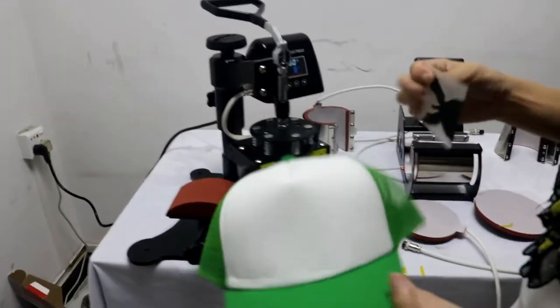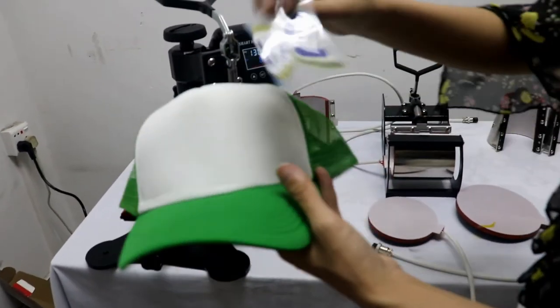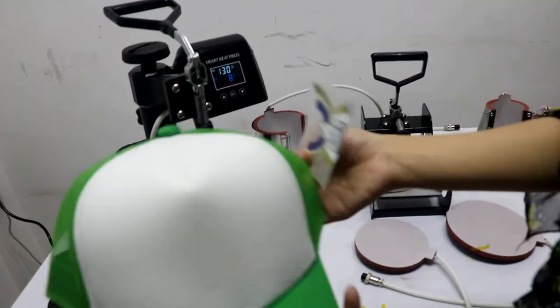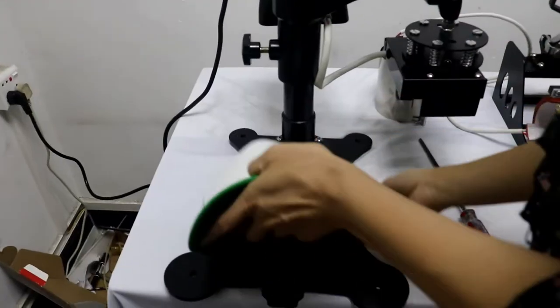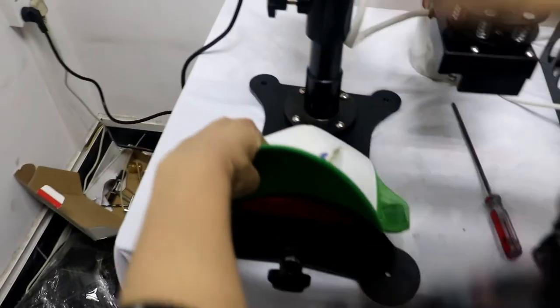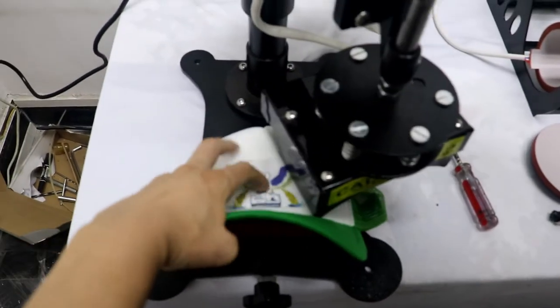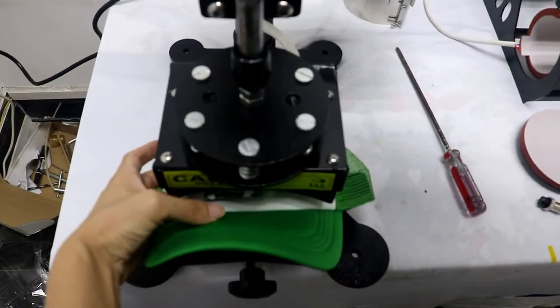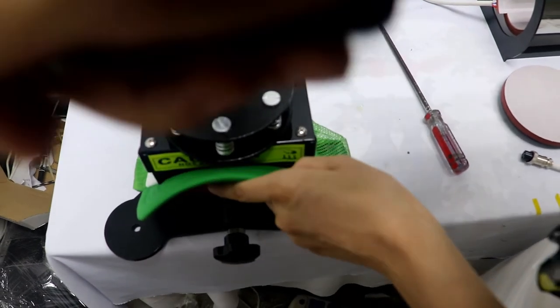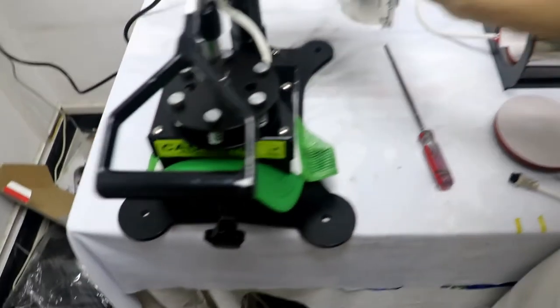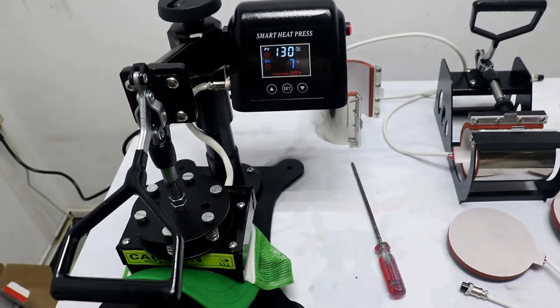Now, we just print the cap for you. The middle is the sticker and this is the cap. We just press here. Okay. First, we just put in here. And then, put here. And then, just put here. Remember, must be in the middle. And then, press down it. Then, press down. If you can, done.